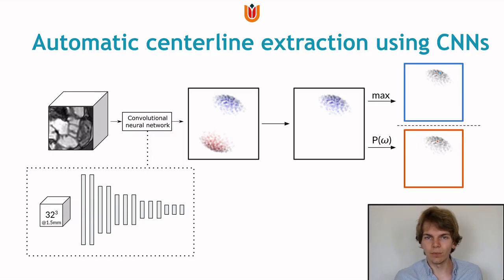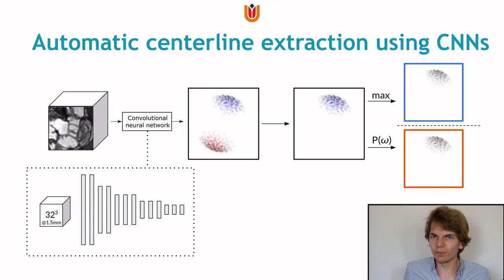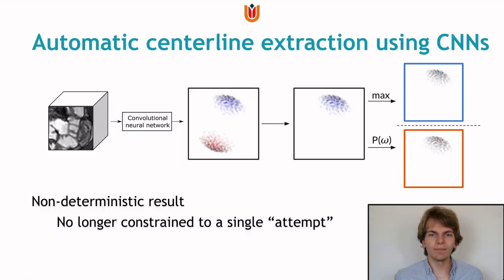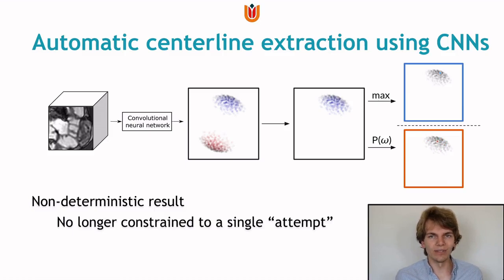The crucial addition we made was to add stochasticity to the system — not in the neural network itself, but when selecting the next direction based on the network output. Because what we get as network output is a probability distribution, we don't have to take the maximum; we can stochastically sample this result. The benefit of stochasticity is that we get a non-deterministic result. By itself that doesn't improve our center line predictions, but it means we're no longer constrained to a single attempt at tracking. So we can initialize multiple tracking agents, where each agent yields a sample from the local solution space, allowing us to explore this space and filter outliers.